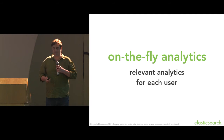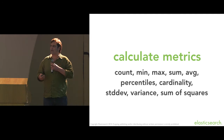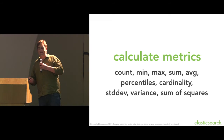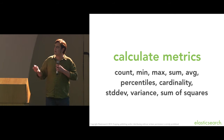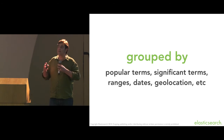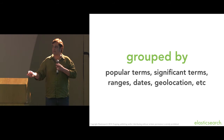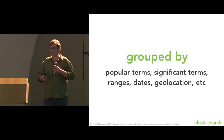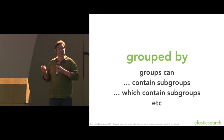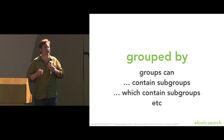These are not pre-cached estimates — we get relevant analytics for each user. The metrics we can calculate include count, min, max, sum, average, percentiles, cardinality, standard deviation, variance, and so on. These are calculated on numeric or date fields. We can group these values by popular terms, significant terms, ranges, dates, geolocations, geodistances, etc. Groups can contain subgroups, and so on. Analytics is a very powerful tool in Elasticsearch — in fact, a lot of people don't use it for search at all, they just use it for analytics.